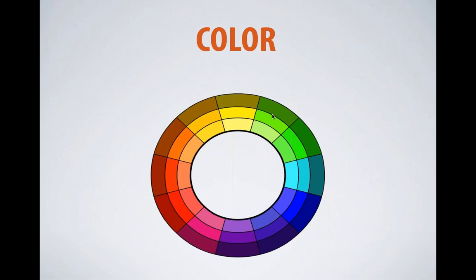In week one we defined what aesthetics was. The definition we're working with is that aesthetics is the interaction of different media elements and the way they influence our perceptual reactions. We dealt a little with imagery and visual storytelling as elements within design that influence those perceptual reactions.